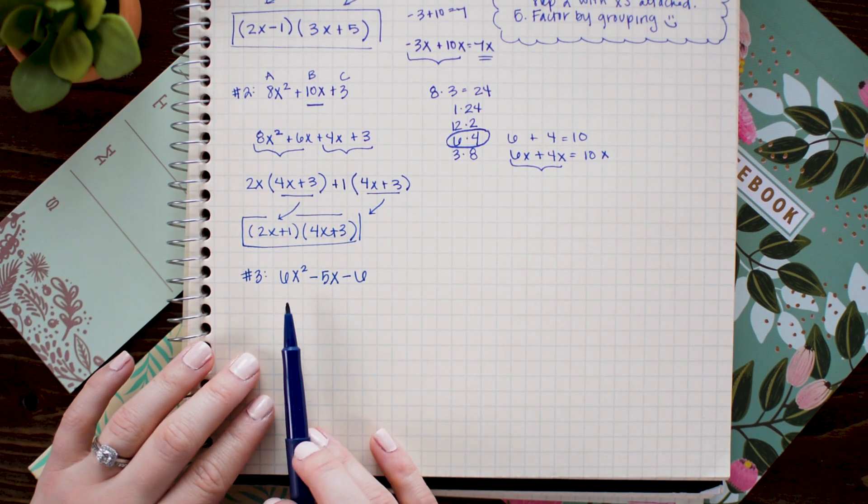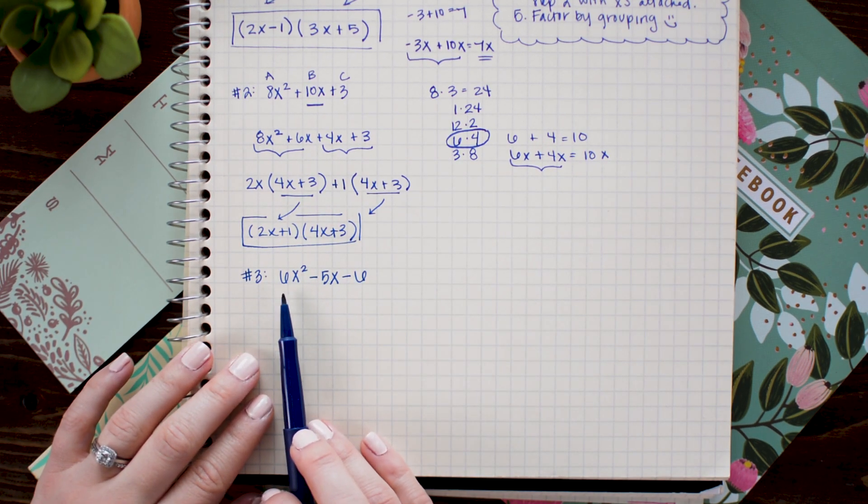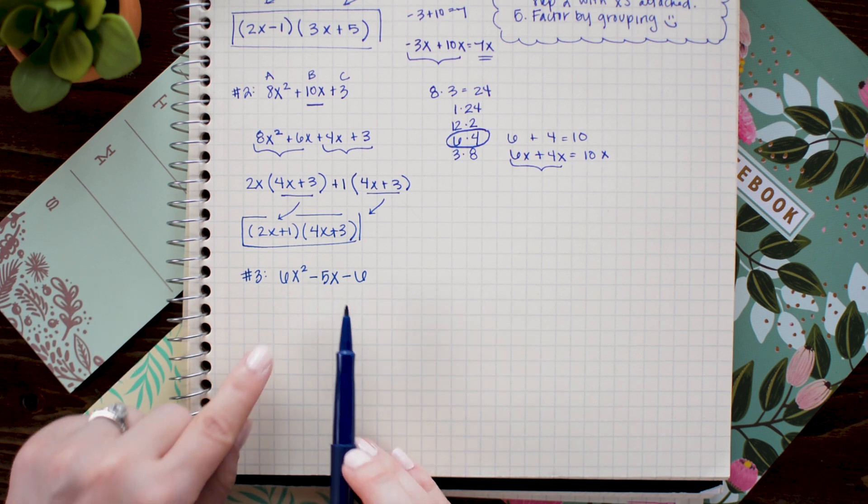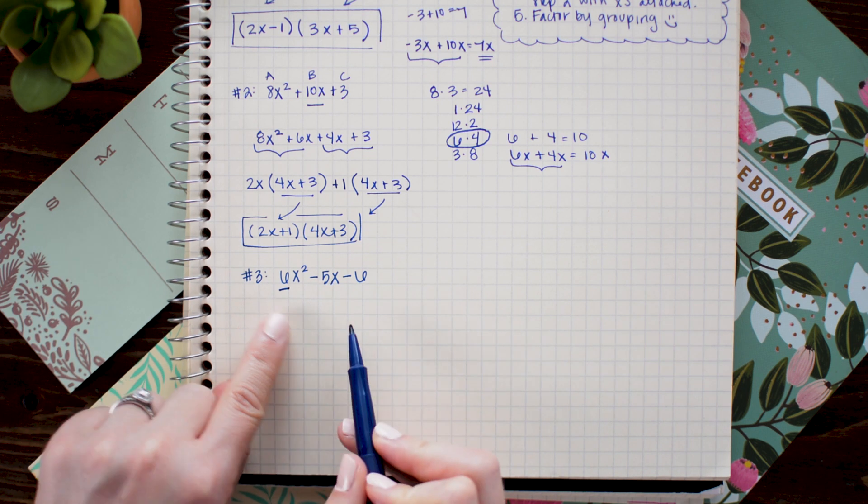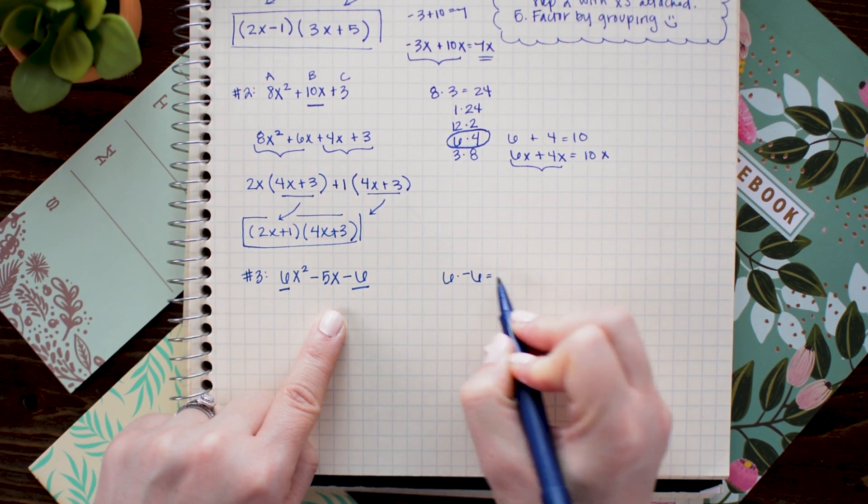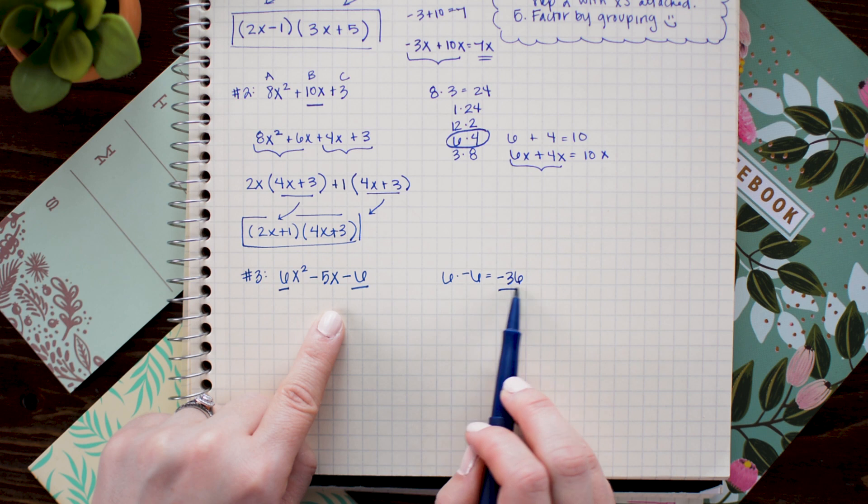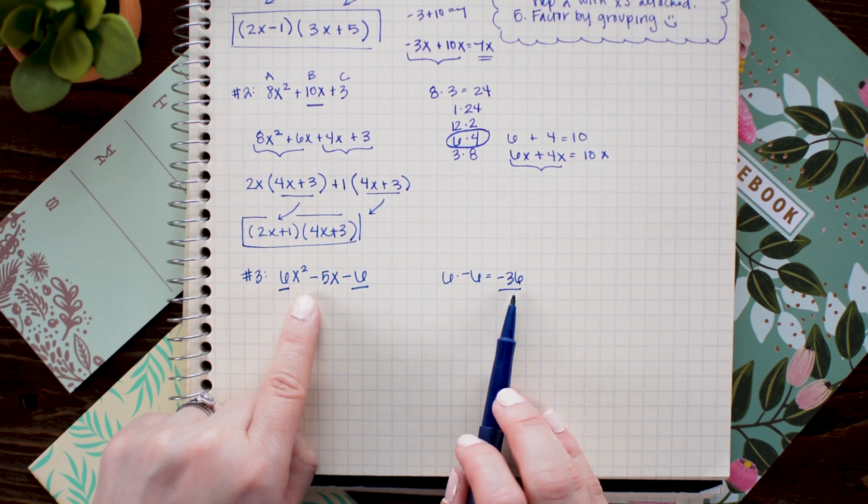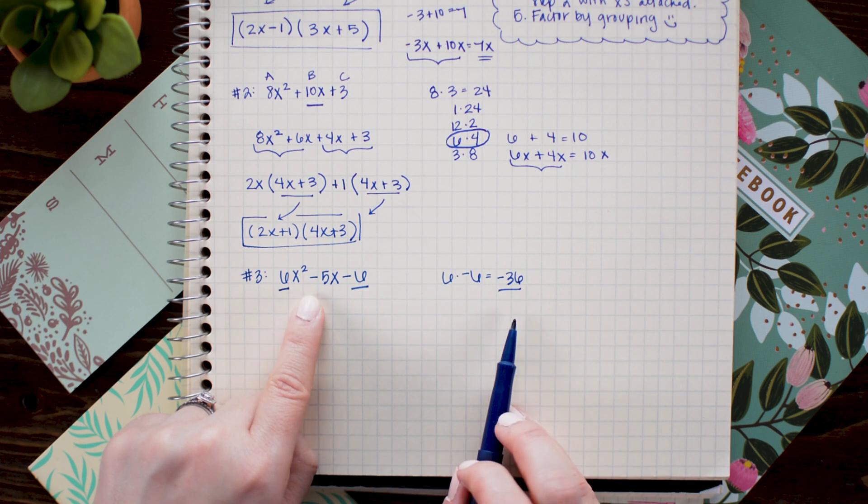For our final example of the day we are going to factor 6x squared minus 5x minus 6. So once again I start by multiplying 6 and negative 6 together. I then look for the factors of their product so the factors of negative 36 that combine to negative 5. First I'll list off the factors.